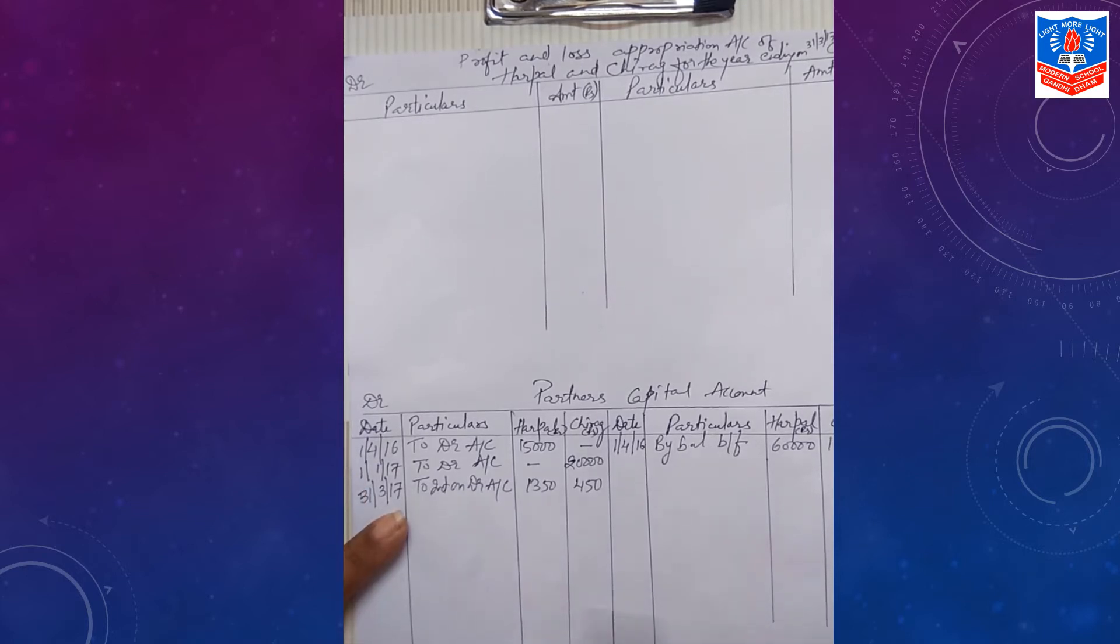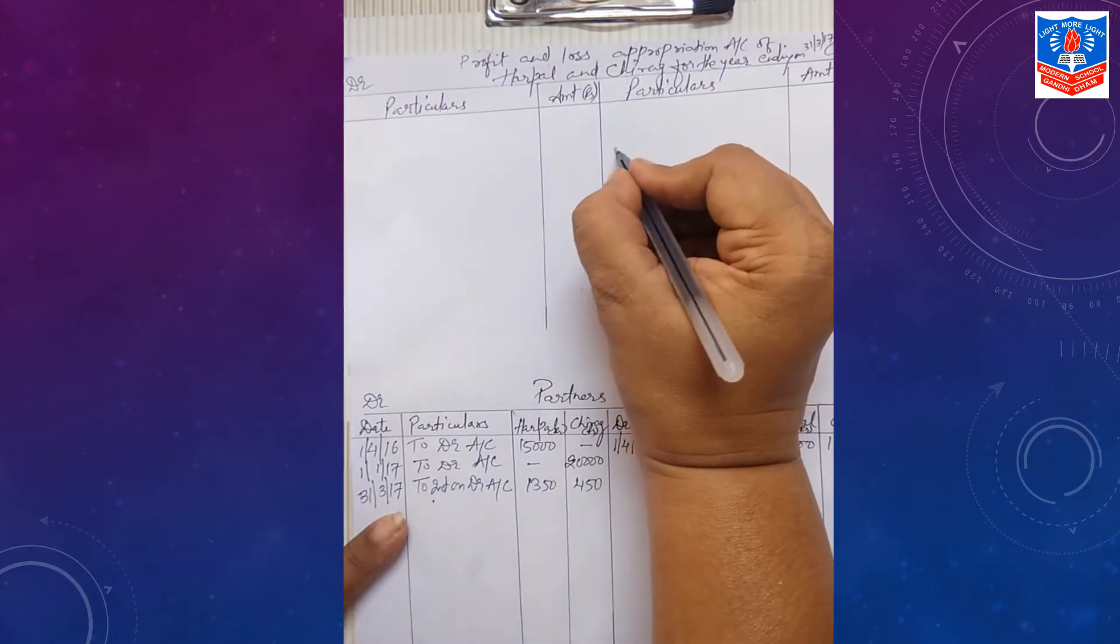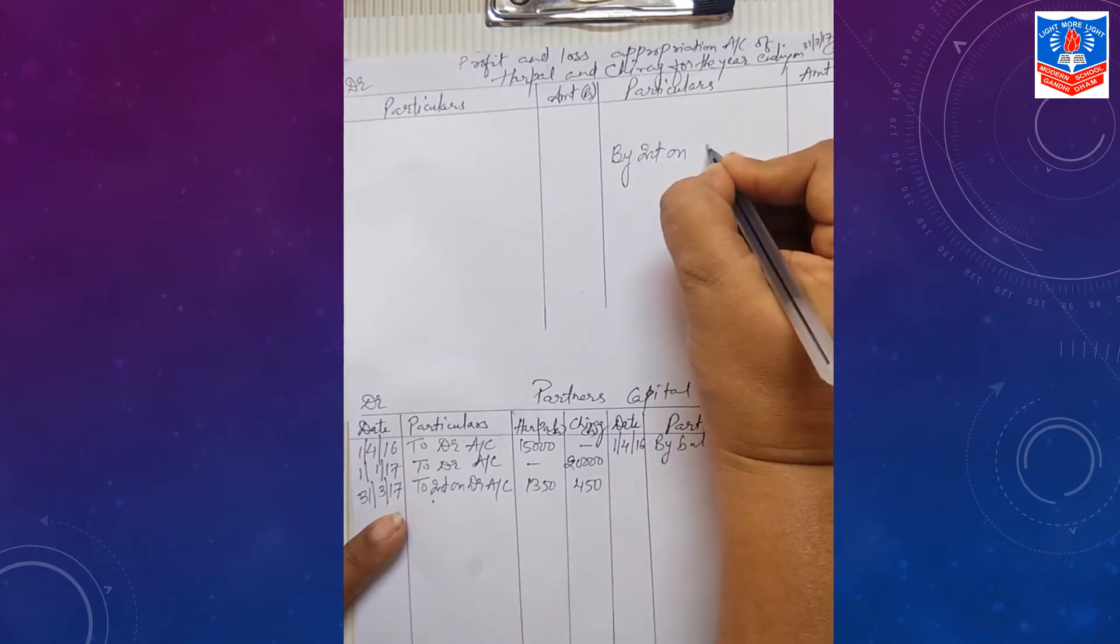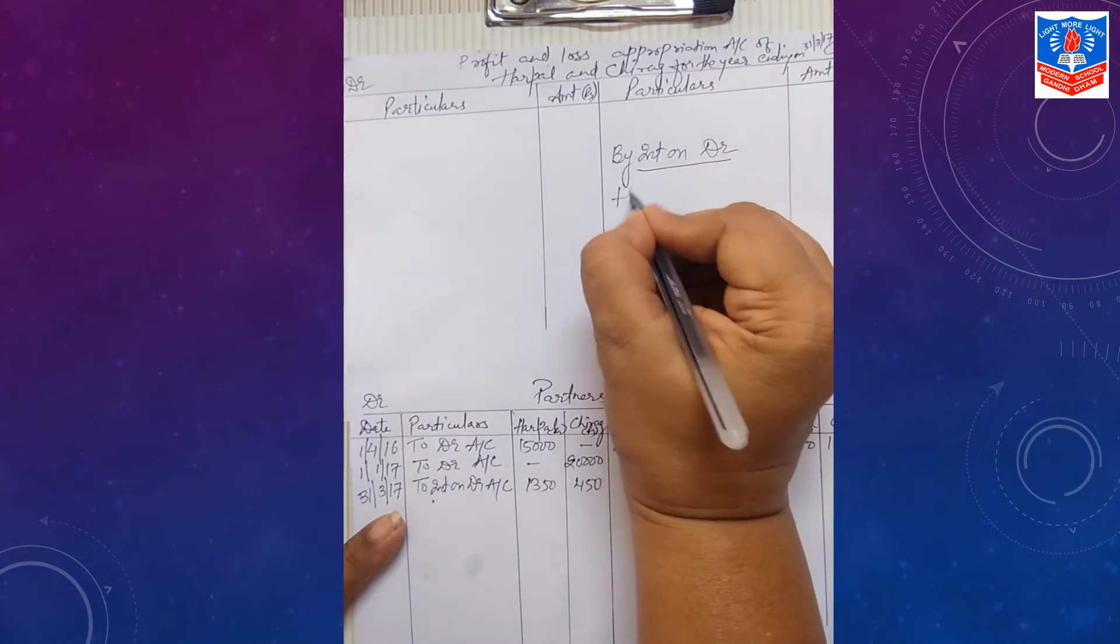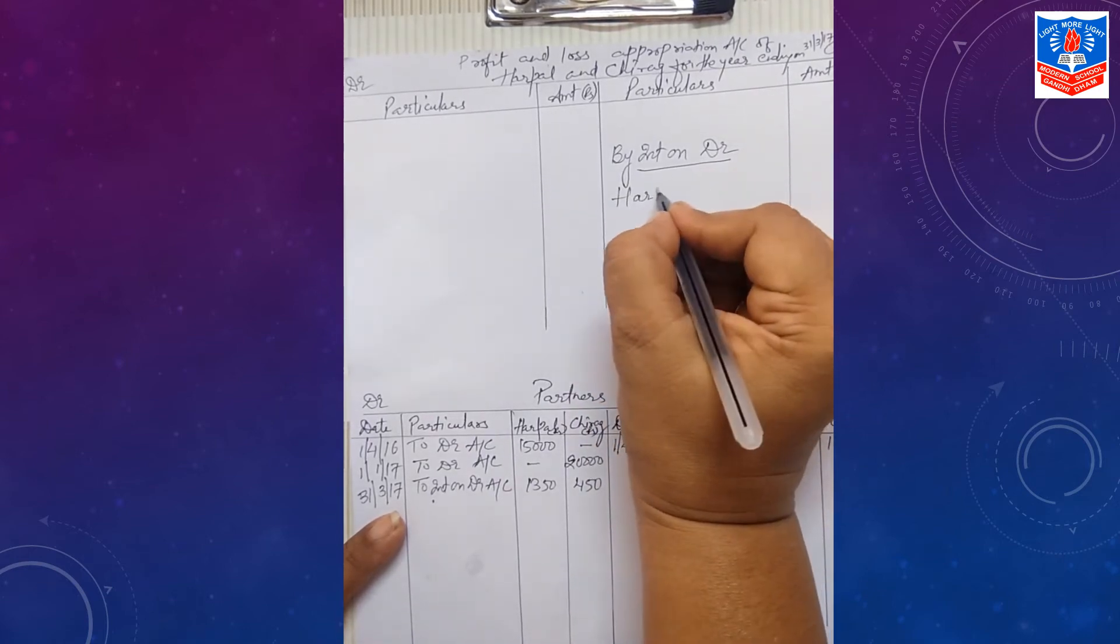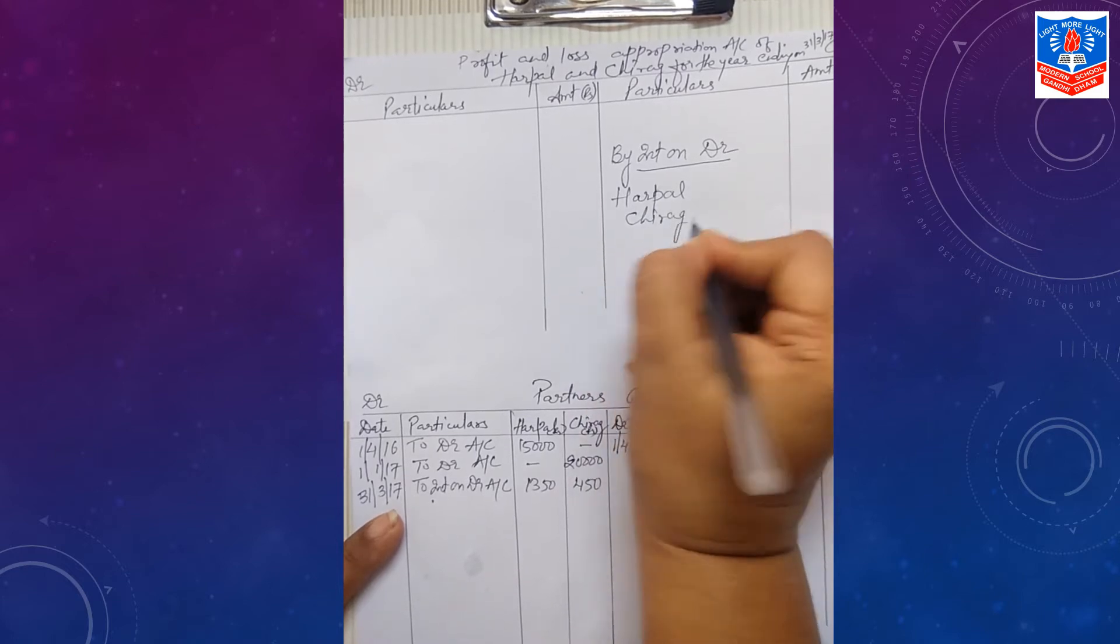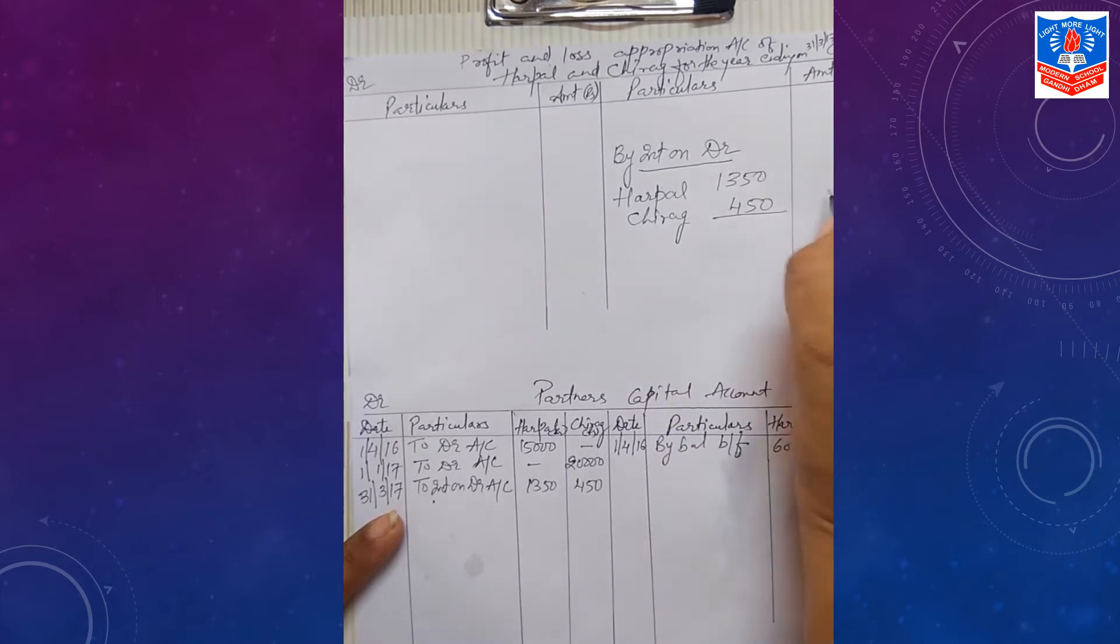Second effect of it goes to P&L appropriation. Interest on drawing, expense for partner, debited to partner's capital, but income for firm, credited to P&L appropriation account. By interest on drawing, Harpal Rs. 1,350, Chirag Rs. 450. Total interest on drawings outside will be Rs. 1,800.